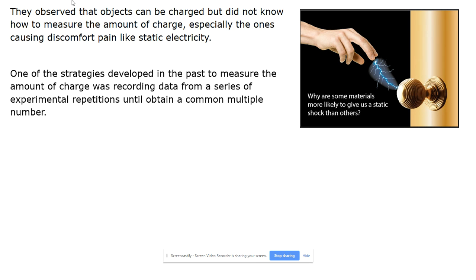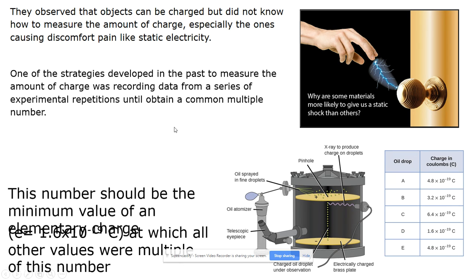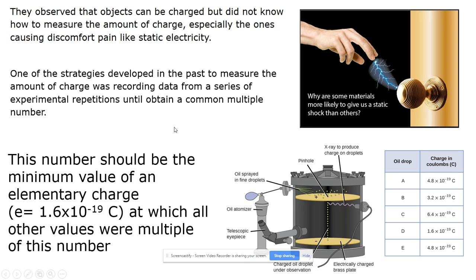One of the strategies developed in the past to measure the amount of charge was recording data from a series of experimental repetitions until obtaining a common multiple number. Robert Milliken created the oil drop experiment and recorded data from a series of experimental repetitions to find the minimum value of an elementary charge, which is 1.6 times 10 to the negative 19 coulombs.